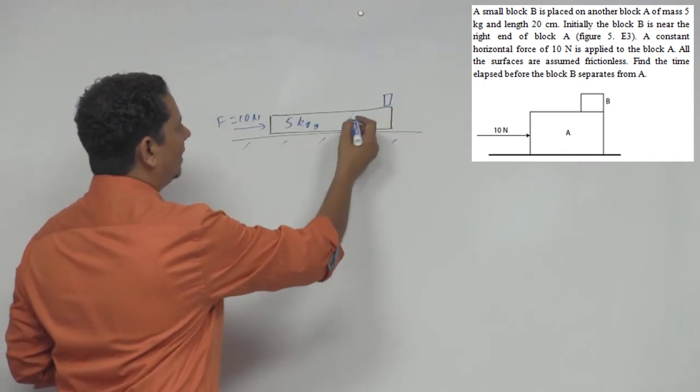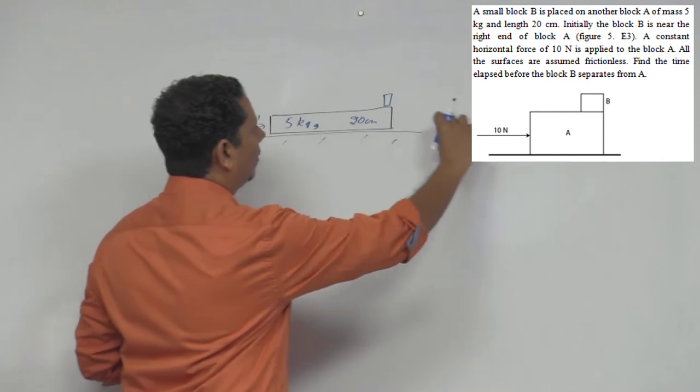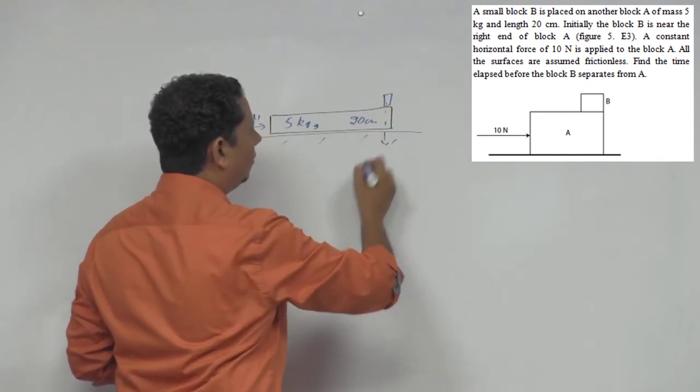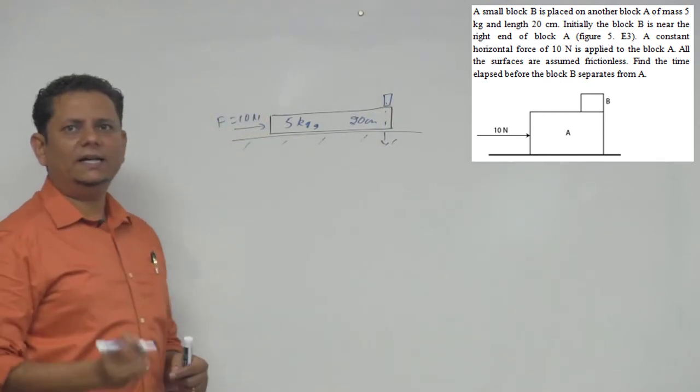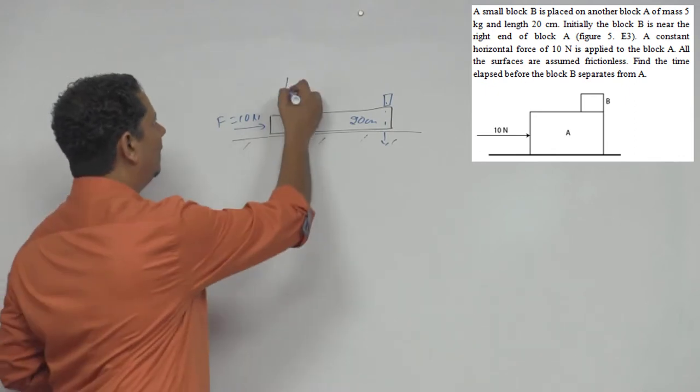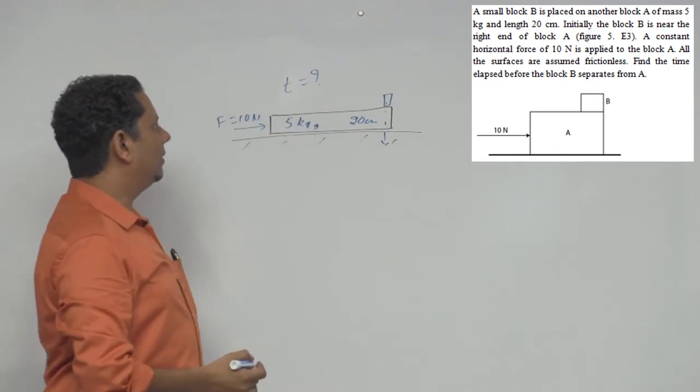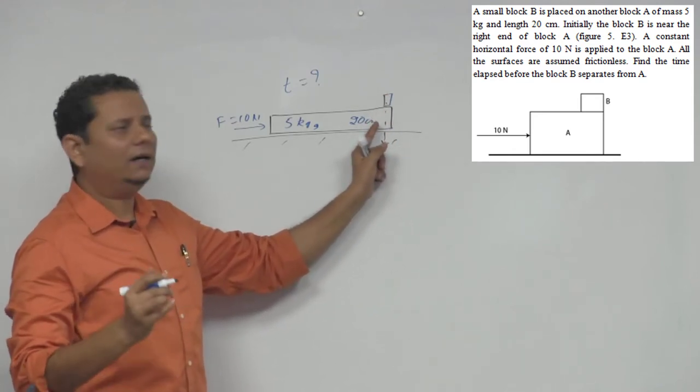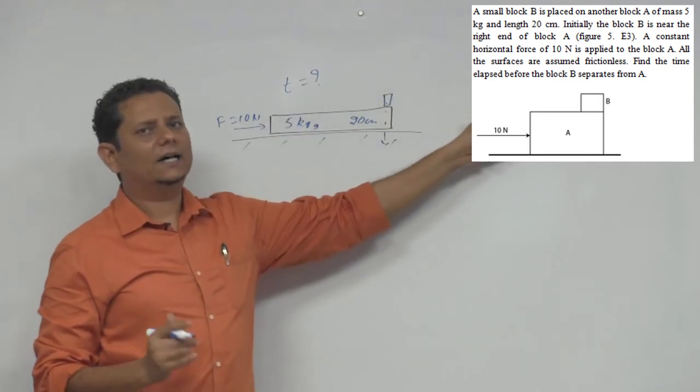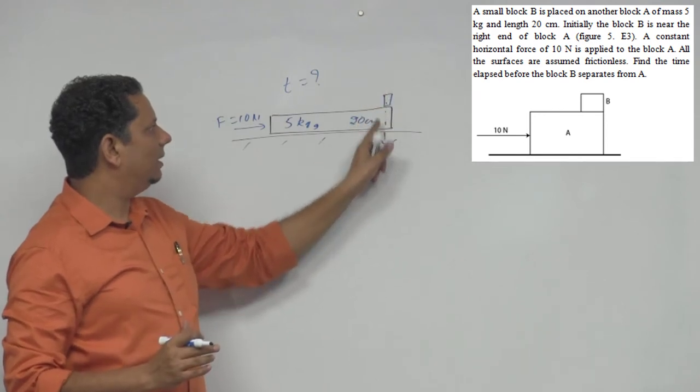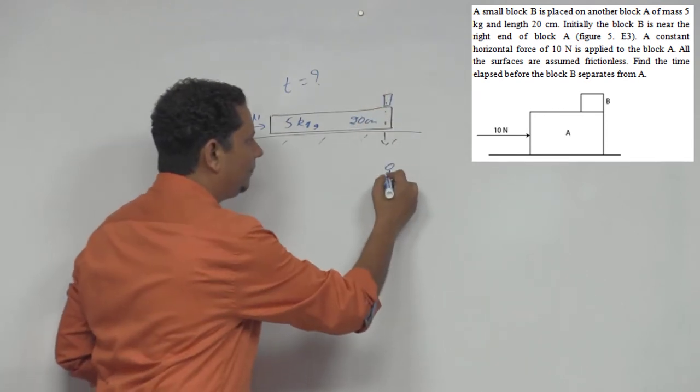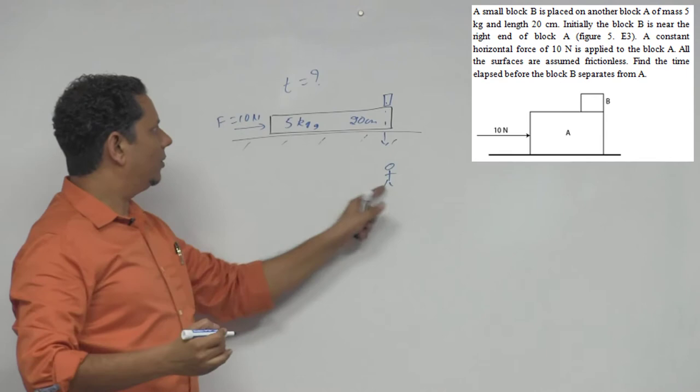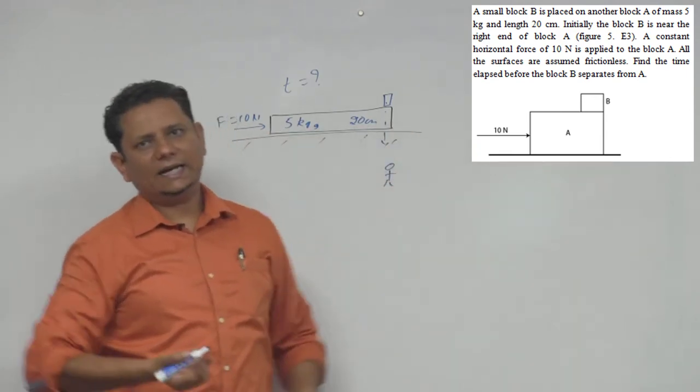Since the surface is frictionless, what will happen is this block will stay here and this block A will move forward and B will fall down from underneath. The question is how much time later - we have to find the time when both blocks separate. This block is staying in place. If there was friction between them, that block might also move, but since it's frictionless, this block from the ground frame you're watching, will just drop here as the other block moves forward underneath.